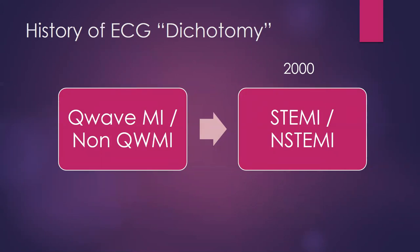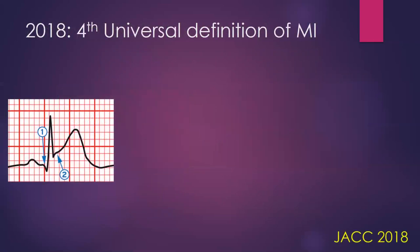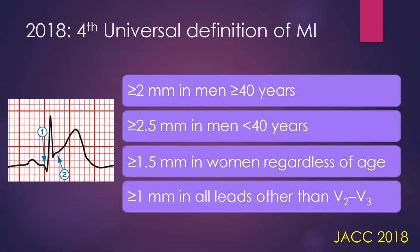This has undergone lots more refinement, and we're now in the fourth iteration of what we call a universal definition of MI — the first one started in 2000. If you're studying for exams, you probably want to know what ST elevation really is and where to apply it. Arrow one points to the beginning of the Q-wave, and arrow two points to the J-point where the ST segment is measured. The difference between these two is elevation, and that's what you're looking for.